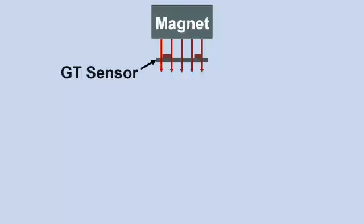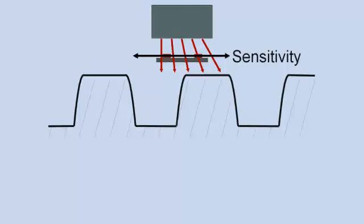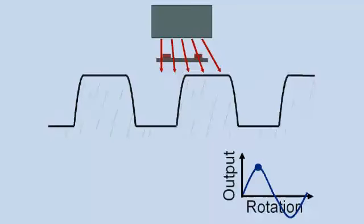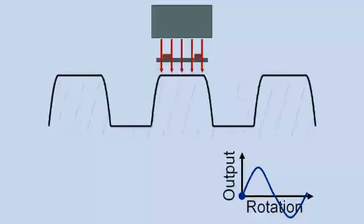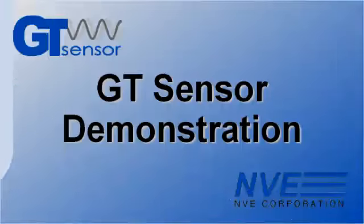A biasing magnet provides field and the flux lines are deflected into the direction of sensitivity by passing metal gear teeth. The sensor produces a sinusoidal output with one cycle per tooth. Let's go to the demonstration.